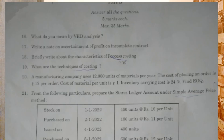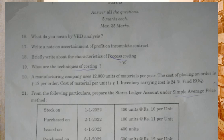Moving to Part B. First question: what do you mean by VED analysis? Write notes on ascertainment of profit on incomplete contract. Write about the characteristics of process costing — process costing is theory. Then techniques of costing. EOQ calculation — easy.